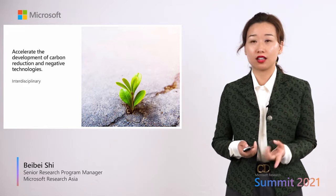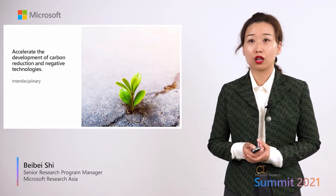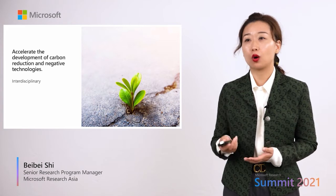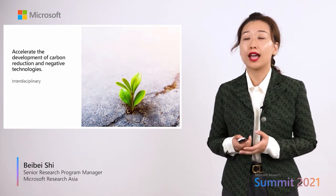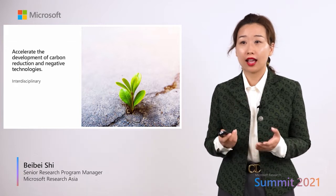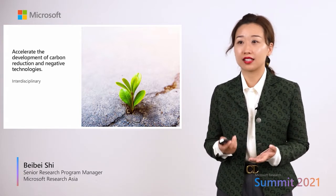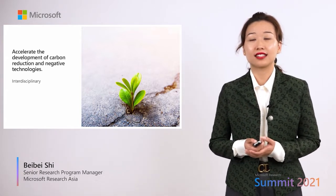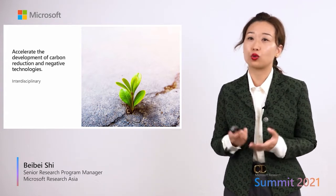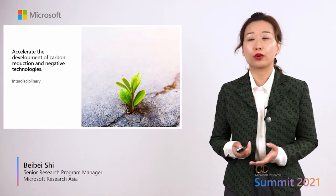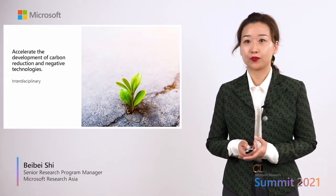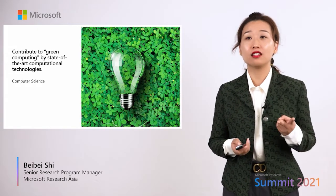For the first approach, it is interdisciplinary research. We go deep into the fields and problems of environmental science, atmospheric science, earth science, and energy science, using computer technology to make innovations to help carbon reduction and carbon neutrality.